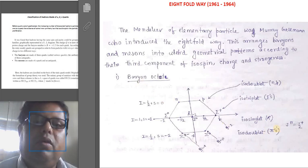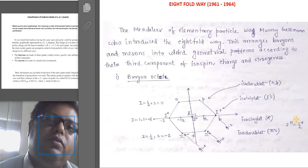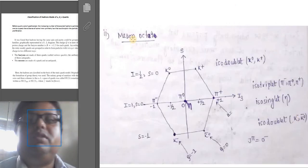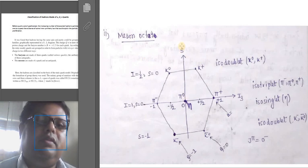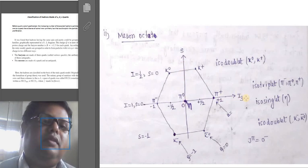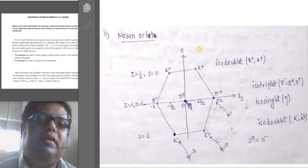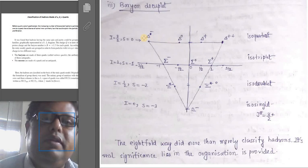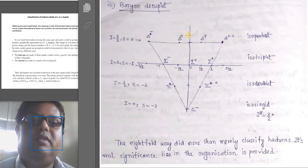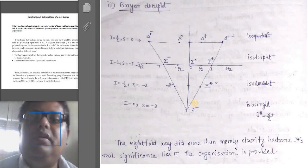Interestingly, they all have spin parity of half plus. Now let's go to the next example, which is the meson octet. Here again, the Y axis is the strangeness axis and X axis is the third component of isospin. Similarly, we can move forward to the baryon decuplet case, where the ten various states are shown in the pattern of an inverted triangle.